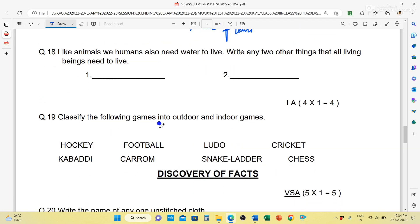Classify the following games into outdoor games and indoor games. The games that we play inside our house are called indoor games, and the games we play outside are called outdoor games. Hockey is your outdoor game. Kabaddi outdoor. Football outdoor. Carrom indoor. Ludo indoor. Snake ladder indoor. Cricket outdoor. And chess is your indoor.